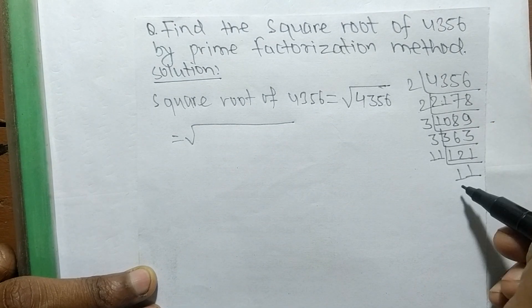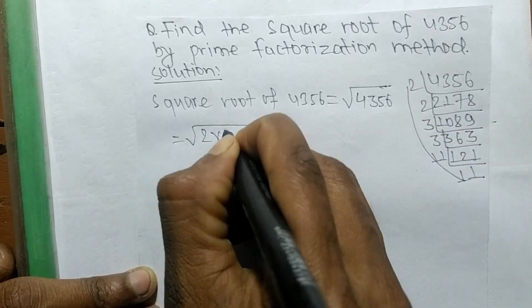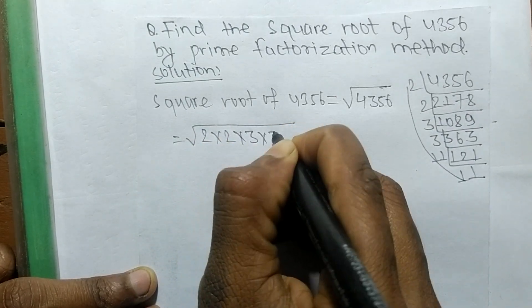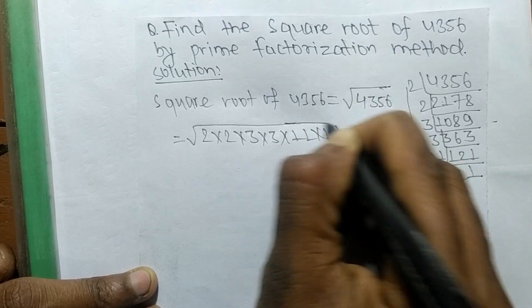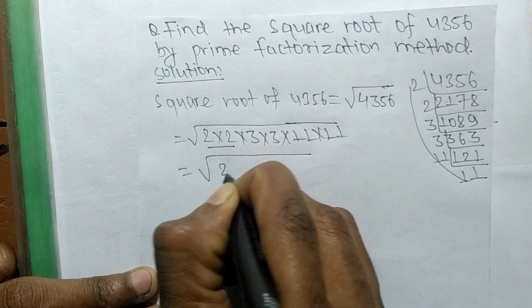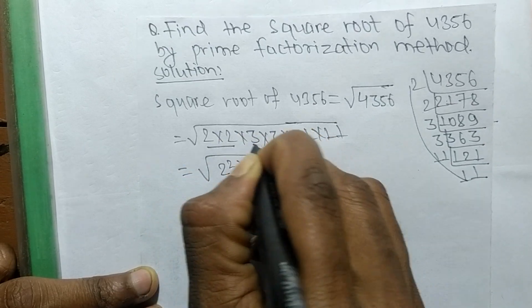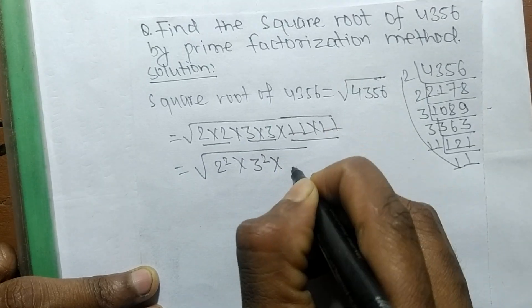So it is 2 into 2, 3 into 3, and 11 into 11. So 2 into 2 means it is 2 squared, 3 into 3 is 3 squared, 11 into 11 is 11 squared.